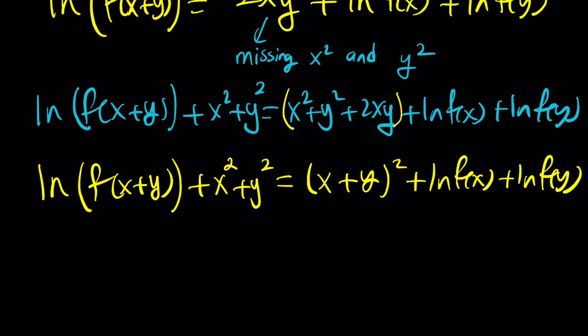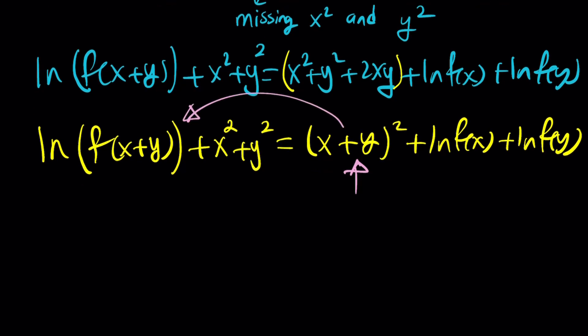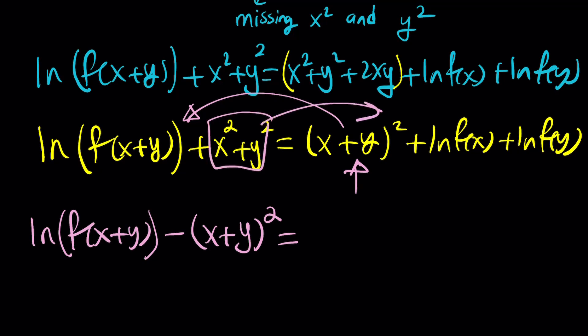Now what can I do next? x plus y squared, this expression right here, is actually on the wrong side. This should be on the other side, which is the left-hand side. So let's go ahead and bring it in. By subtraction, ln f of x plus y minus x plus y squared. Notice that f of x plus y and x plus y squared belong on the same side. By subtracting term-wise, we're going to get ln f of x minus x squared and ln f of y minus y squared.